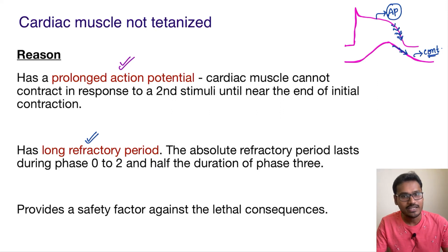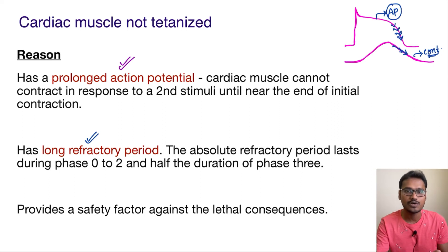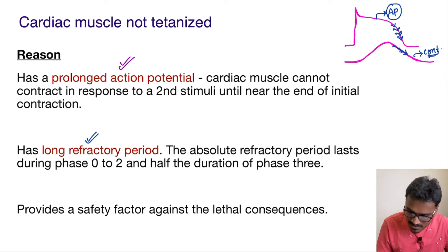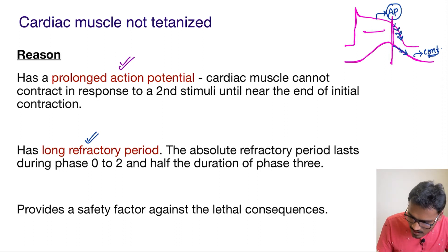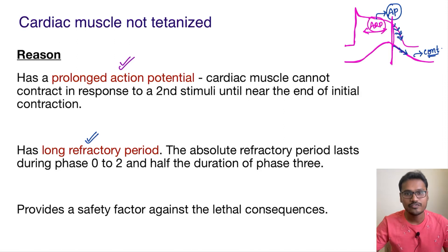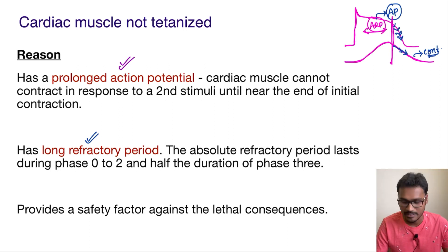What is refractory period? Refractory period means a second stimulus will not be able to elicit any response during this period. Cardiac muscle has a long refractory period, and as we can see here, up to this part it is in the absolute refractory period. What is absolute refractory period? Whatever the strength of the stimulus given, it will not respond or produce any new impulse in this absolute refractory period.